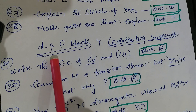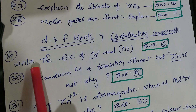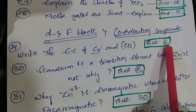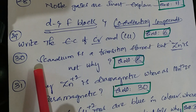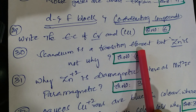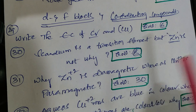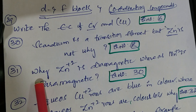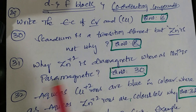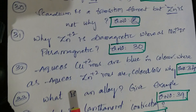Next lesson is D and F block elements and coordination compounds. Write the electronic configuration of chromium and copper - that is question number 6. Scandium is a transition element but zinc is not - why? That is question number 8 from D-block elements material. Why is Zn²⁺ diamagnetic whereas Mn²⁺ is paramagnetic - question number 30 from material and Telugu academy.